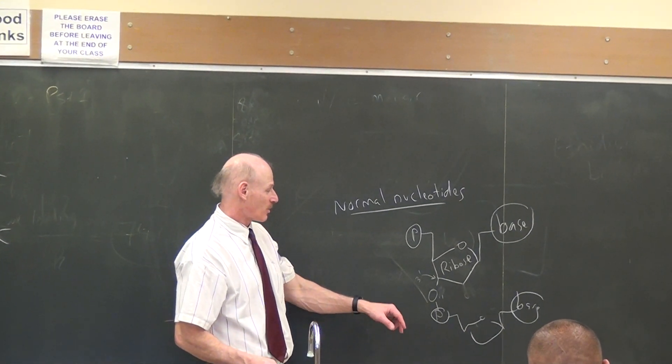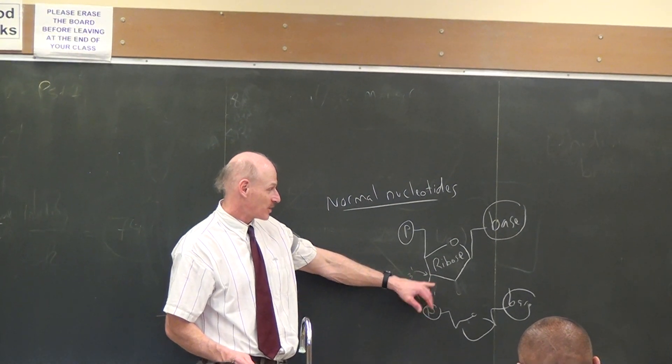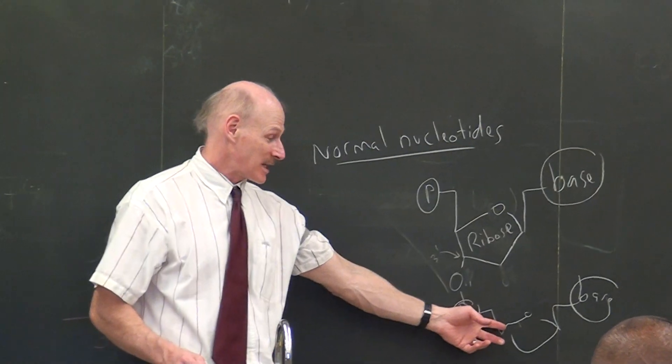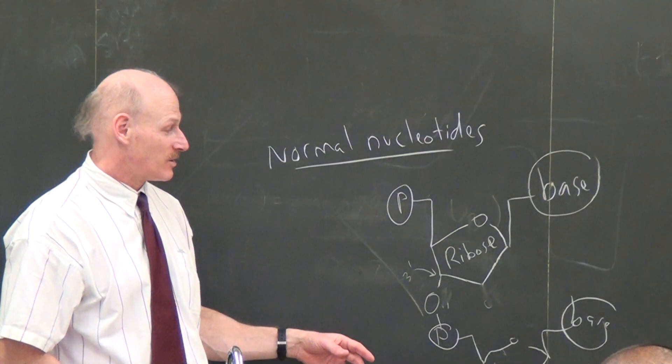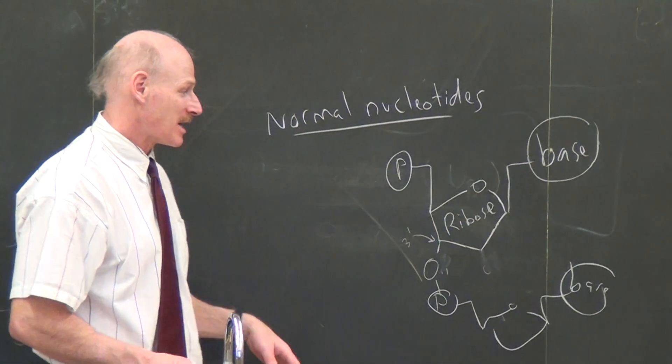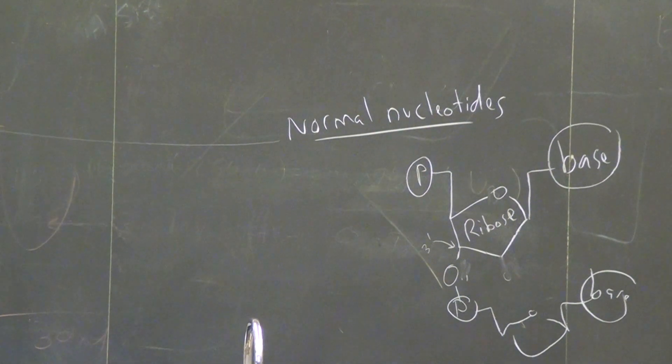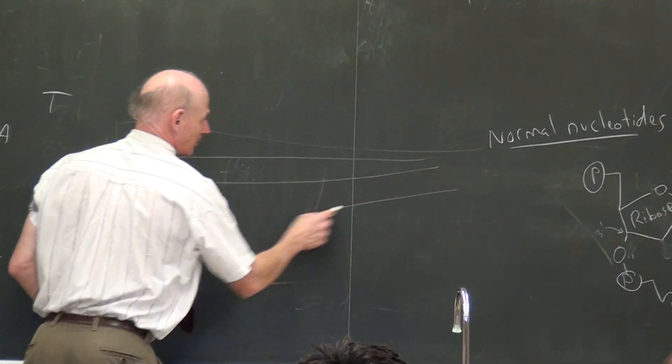And so the important point to remember here is that you really need that three prime OH group on a nucleotide to allow it to be linked to the next nucleotide. If that oxygen was missing, DNA polymerase could not add any more nucleotides to that one.